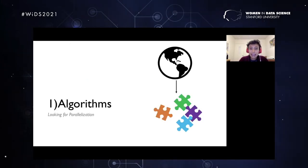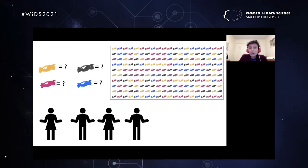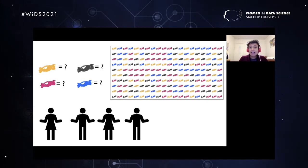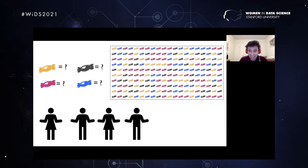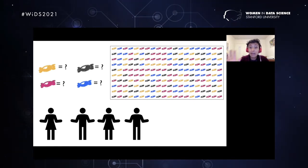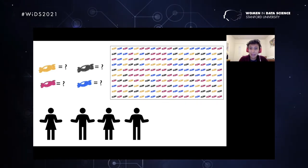Let's start with algorithms and things we can parallelize. Let's say you and three friends are starting a shop to sell candies — you sell four different types: yellow, black, red, and blue. You want to find the most popular candy. You have your sales from one week, and you need to count the proportion of each color among all the sales, and you want to distribute the work between the four of you. Think for a second about how you would distribute this data.